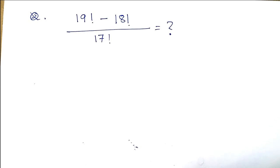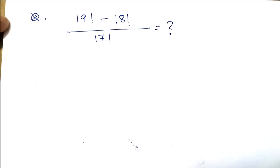Welcome to today's maths class. Today's problem is a very simple one that looks like a very complicated one, but actually is very simple. It is factorial 19 minus factorial 18, divided by factorial 17, and we have to simplify this expression.